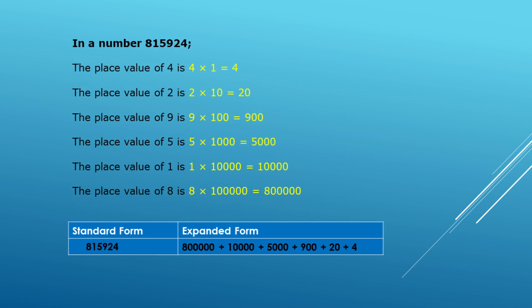Now we will consider another number: 8,15,924. Here, 4 is in the 1's place, so place value of 4 is 4. 2 is in the 10's place, so place value of 2 is 20. 9 is in the 100's place, so place value of 9 is 900. 5 is in the 1000's place, so place value of 5 is 5000. 1 is in the 10,000's place, so place value of 1 is 10,000. And 8 is in the lakh's place, so place value of 8 is 8 lakh. So the expanded form of 8,15,924 is 8 lakh + 10,000 + 5,000 + 900 + 20 + 4.